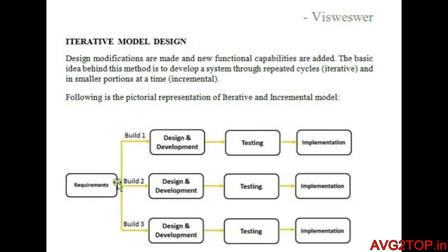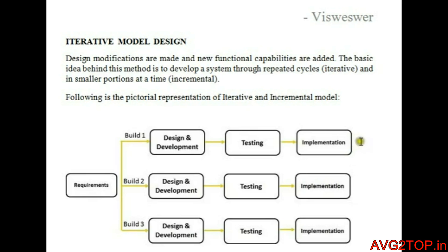In the diagram, requirements are fulfilled and the design and development process for developing the software is done after gathering all information. A form of testing is done and implementing in real time is also processed. Here you can see Build 1, Build 2, and Build 3 — three processes done at the same time. These represent various versions of developing the software, and depending upon the requirements, they can be made as version 1 or version 2 repeatedly, involving repeated cycles and small incremental portions of time.